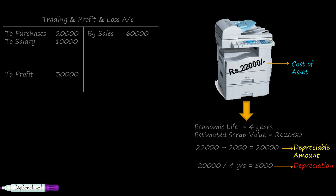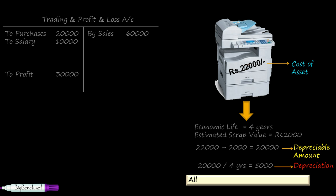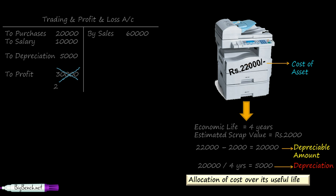Since depreciation is an expense — although non-cash — it will be debited to our profit and loss account. Depreciation is defined as the allocation of cost over its useful life: we allocate 20,000 over the useful life of four years, giving 5,000 every year. Taking this 5,000 to the trading and profit and loss account as depreciation reduces the profit by 5,000, so the new net profit is 25,000. By debiting depreciation to the profit and loss account, we have reduced our profit from 30,000 to 25,000.